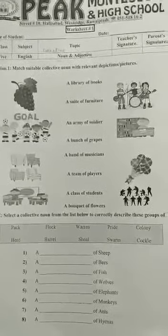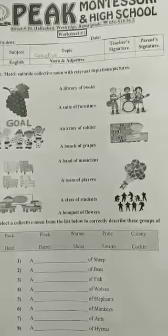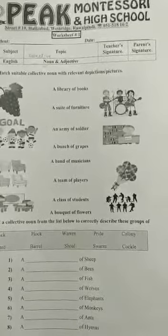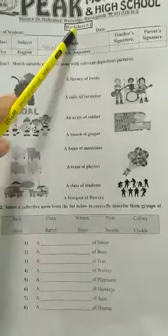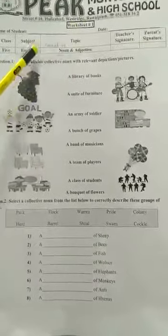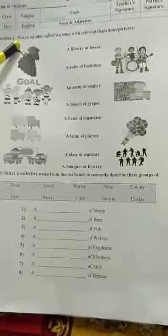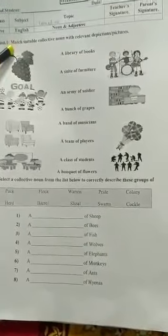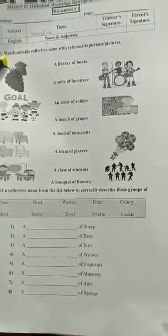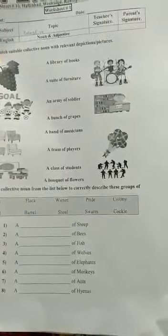Assalamualaikum students, I will guide you about worksheets of class 5. It is worksheet number one, that is about collective nouns. A collective noun is the name given to a collection of things or persons taken as a whole.